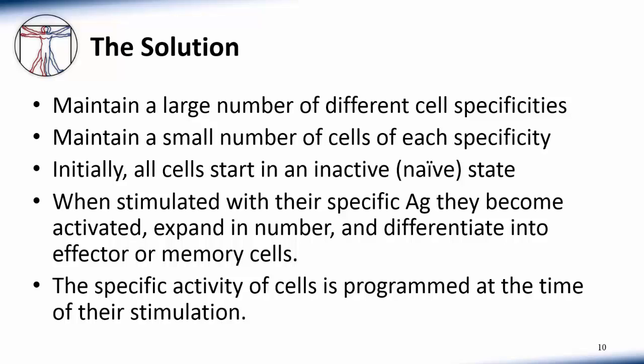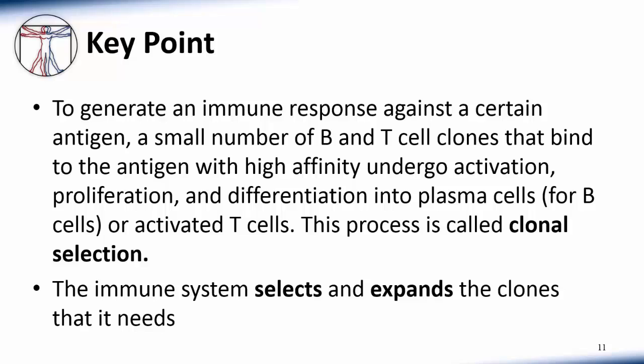This also allows the specific activity of cells to be programmed at the time of their stimulation. The key point is that to generate an immune response against a certain antigen, a small number of B and T cell clones that bind to the antigen with high affinity undergo activation, proliferation, and differentiation into either plasma cells for B cells or activated T cells. This process is called clonal selection. The immune system selects and expands the clones that it needs when it needs them.